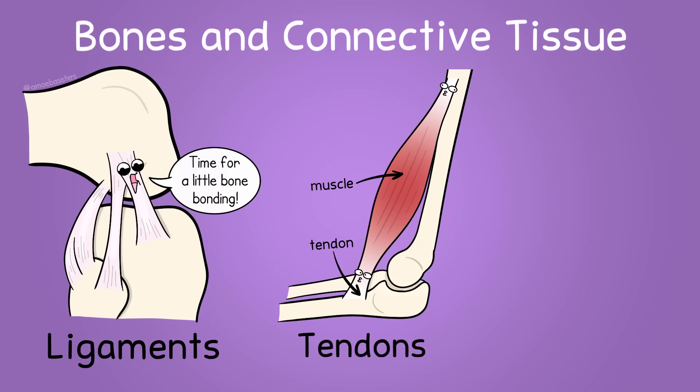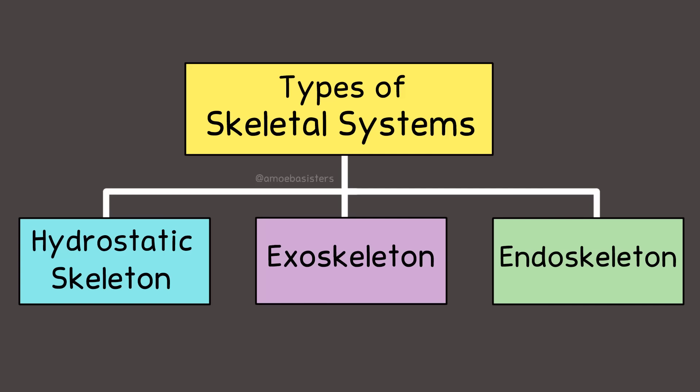Our focus is going to be on the human skeletal system. This system includes bones and also connective tissue like ligaments, which generally connect bone to bone, tendons, which generally connect muscle to bone, and also cartilage, which we'll get to later.